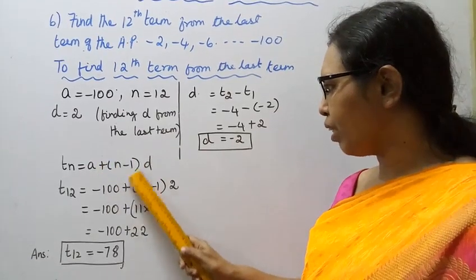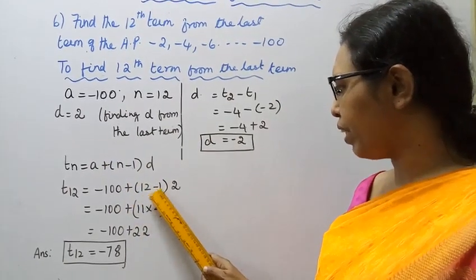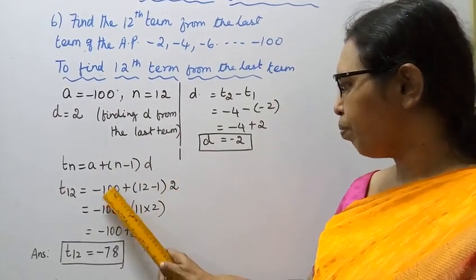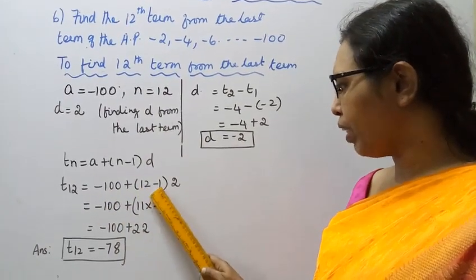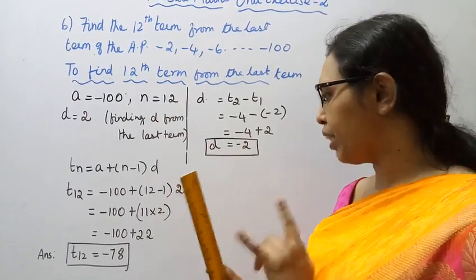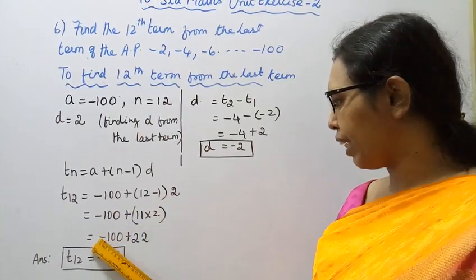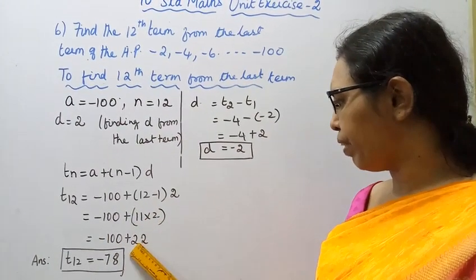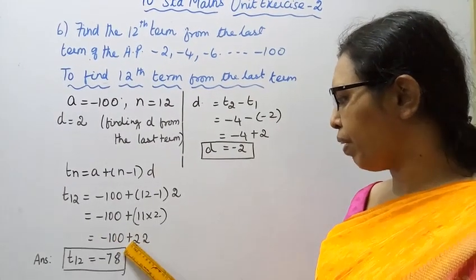Substituting the values: t12 = -100 + (12-1) × 2 = -100 + 11 × 2. Be careful with the brackets. 11 × 2 = 22, so -100 + 22.